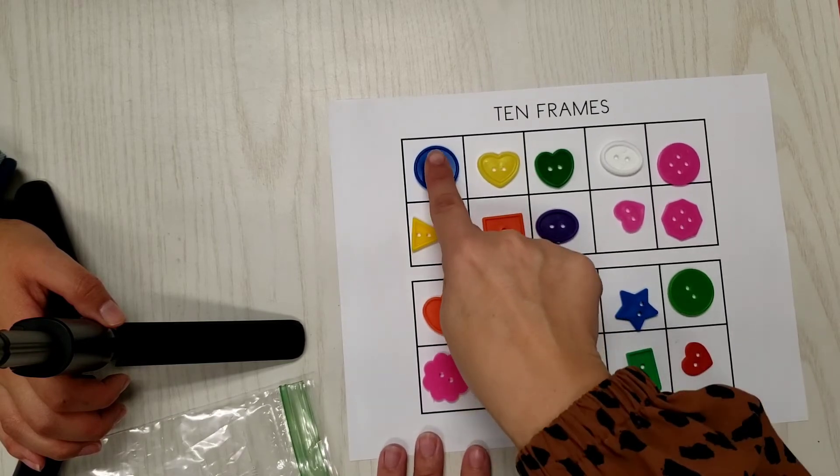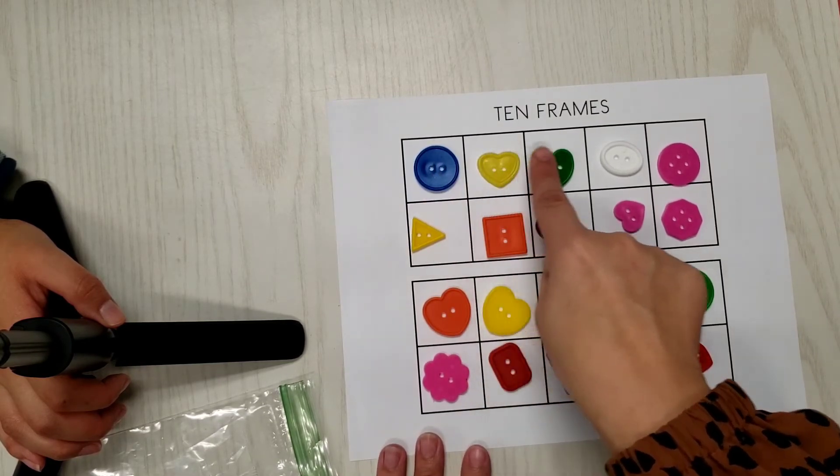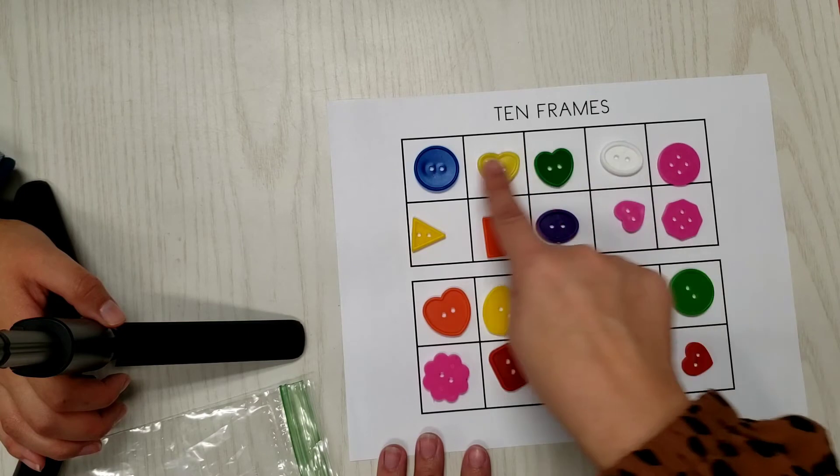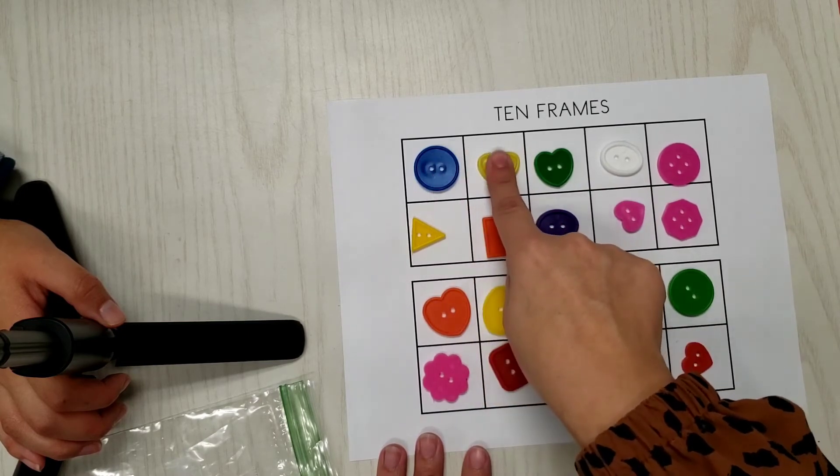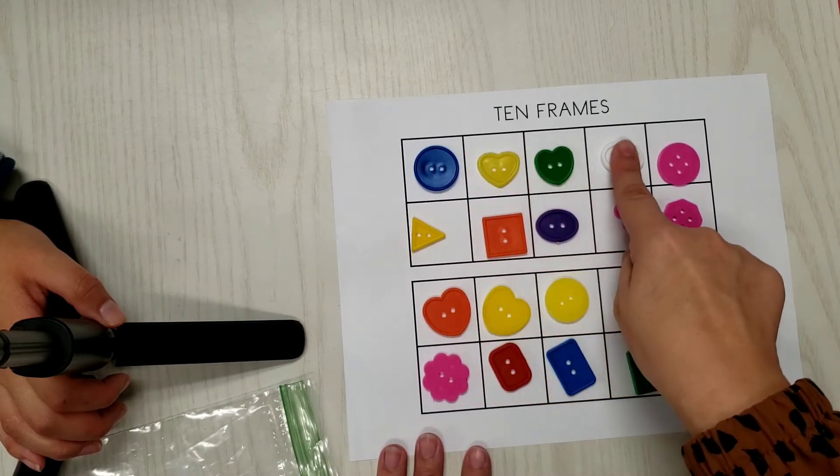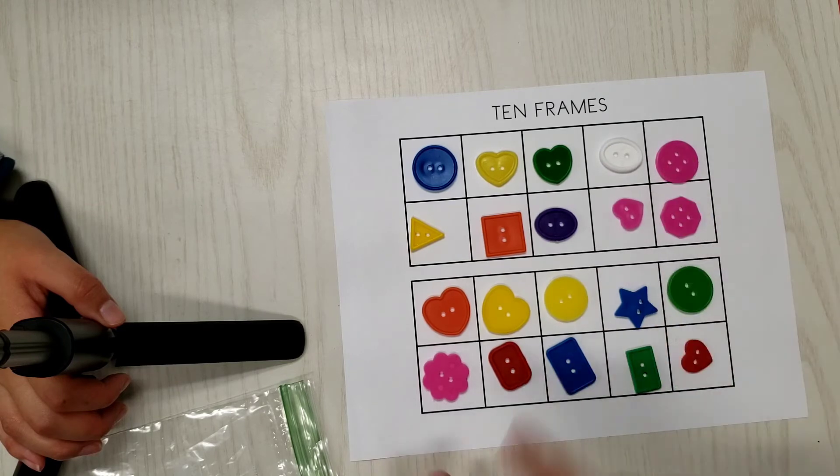But it's really important to practice counting with your child, and when they count, it's really important that they touch each button as they say a number. So, one, two, three, four, five, and so on.